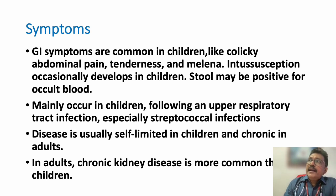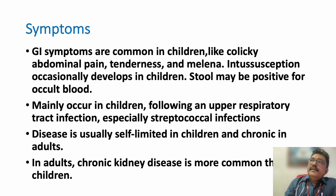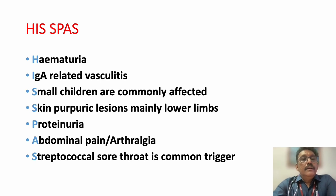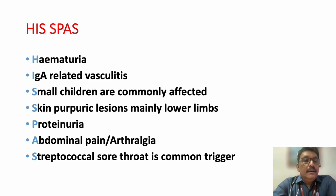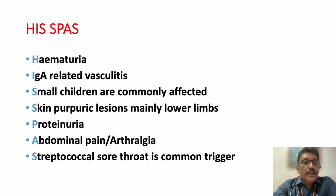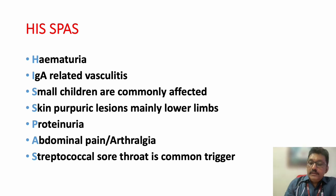Chronic kidney disease can develop in adult patients who develop this type of vasculitis, as kidneys are rarely but significantly involved in adults. You can remember this disease using the mnemonic 'HIS PAST': Hematuria, IgA-related vasculitis, Small children commonly affected, Skin purpuric lesions in lower limb - palpable purpuras, Proteinuria, Abdominal pain, Arthralgia, Streptococcal sore throat as a common trigger.